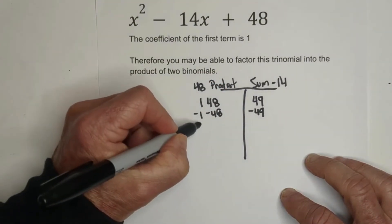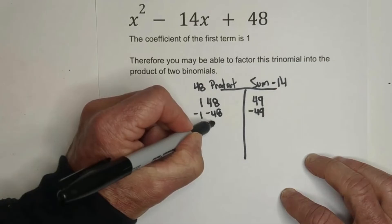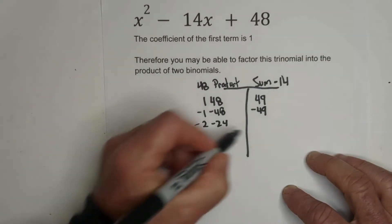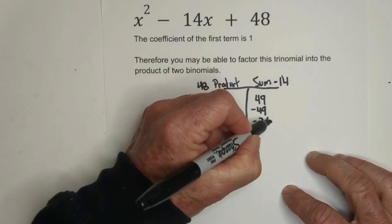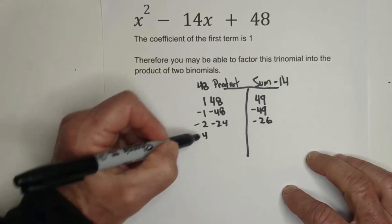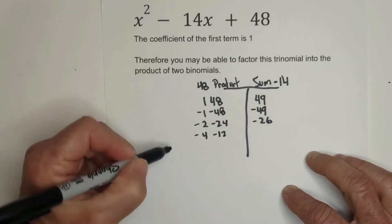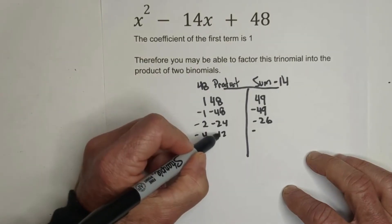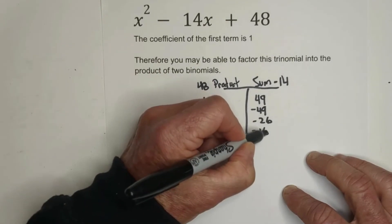So now let's try 2 and negative 24. That's getting a little closer, negative 26, but we aren't there yet. How about negative 4 times negative 12. That equals 48, but it's negative 16.